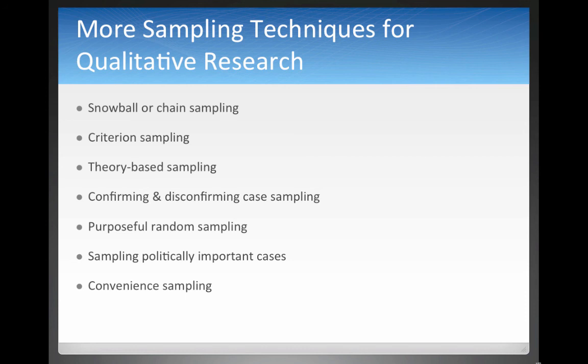Purposeful random sampling is similar to the quantitative random sample. Randomly choosing subjects is not the usual approach in qualitative research, and qualitative research has sometimes been criticized for that. So sometimes qualitative researchers will purposefully do a random sample to demonstrate it works. You might also sample politically important cases. Finally, convenience sampling — like in quantitative research — is where you simply pick the people who are easiest to find, like students walking in front of your campus.